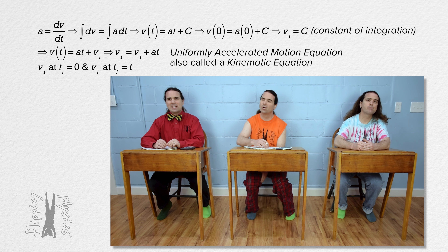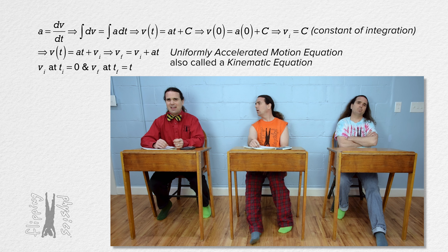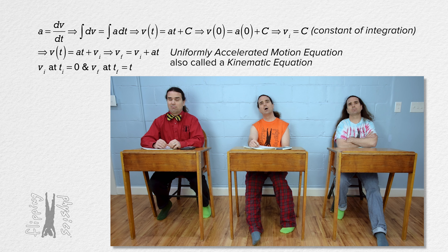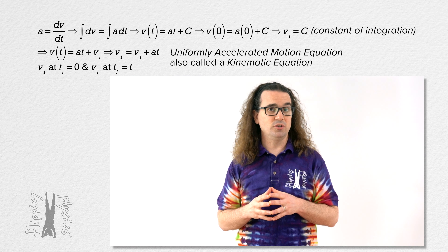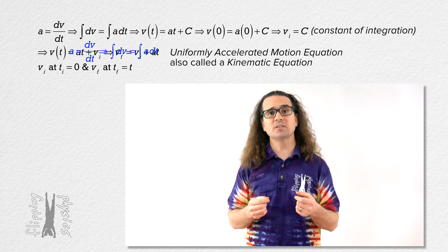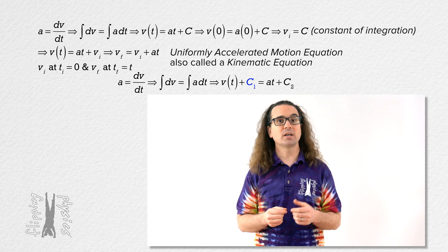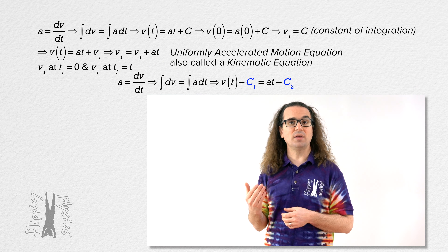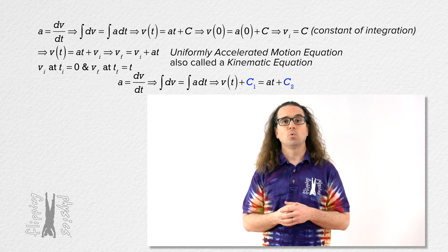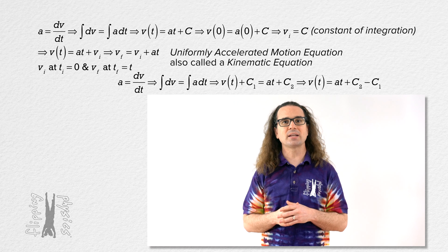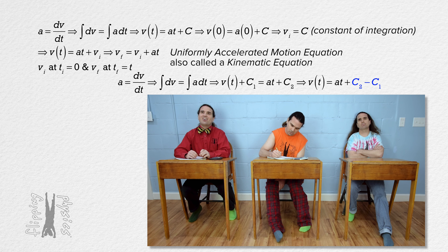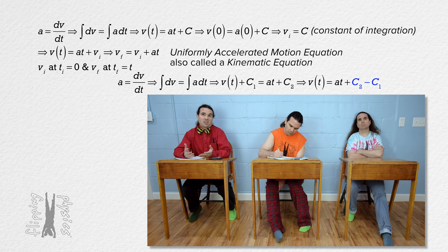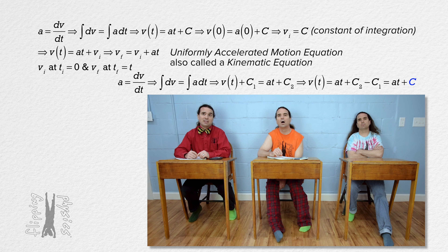But why did we not add a constant of integration to the left-hand side of the equation? Well, we certainly could do that. Let's look at what happens when we add constants of integration to both sides — constant one on the left side and constant two on the right side. We can subtract constant one from the whole equation and we get constant two minus constant one on the right side. The quantity constant two minus constant one is just still a constant, so it does not matter. Adding a single constant C on the right side is equivalent to adding constants to both sides.